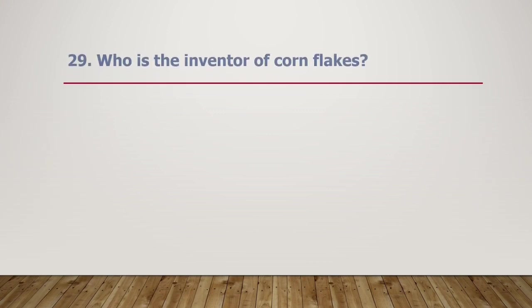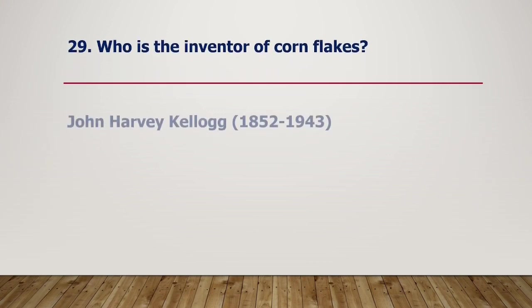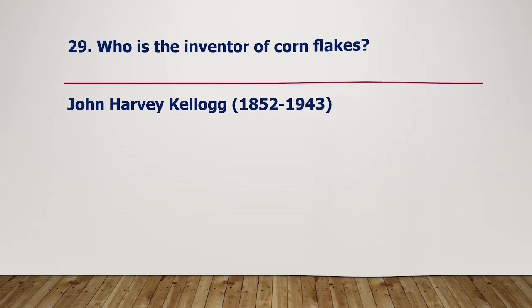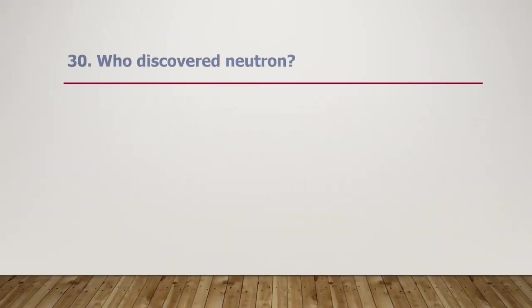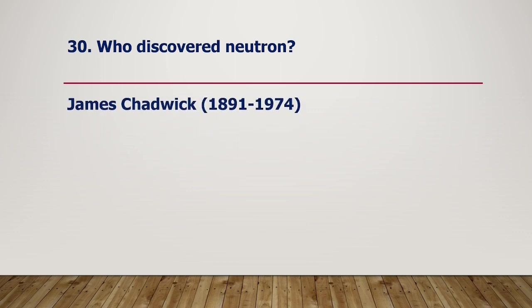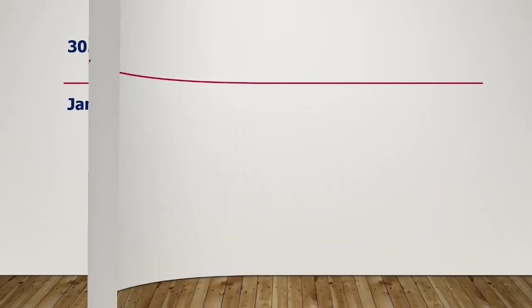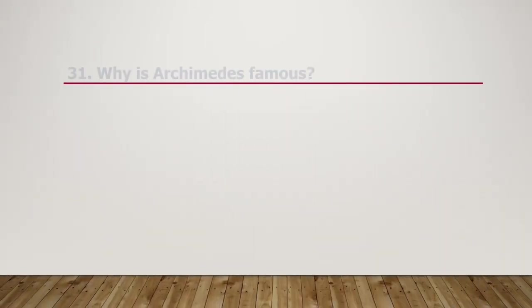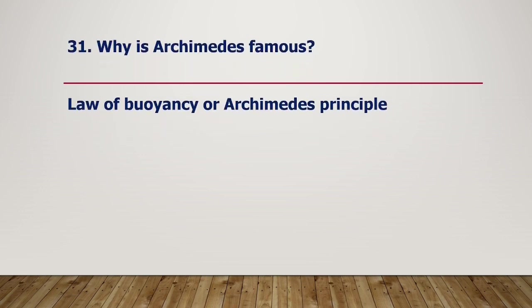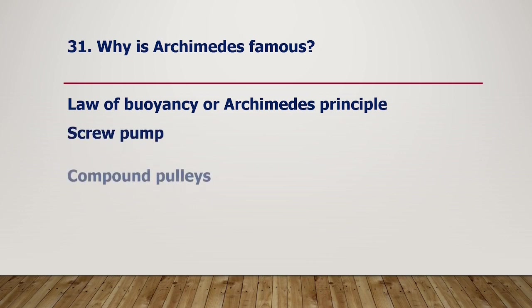Who is the inventor of cornflakes? John Harvey Kellogg, 1852–1943. Who discovered the neutron? James Chadwick, 1891–1974. Why is Archimedes famous? The law of buoyancy, or Archimedes' principle. Screw pump. Compound pulley.